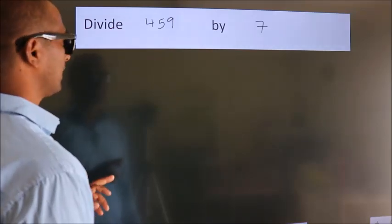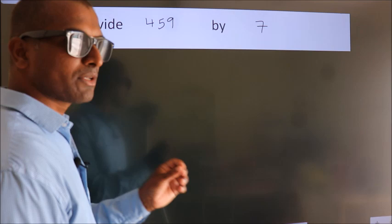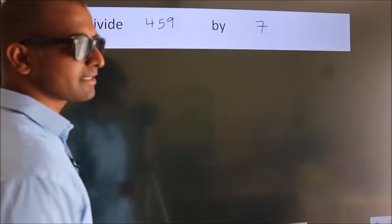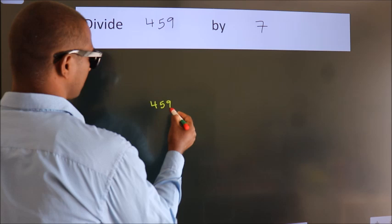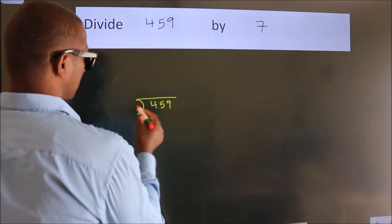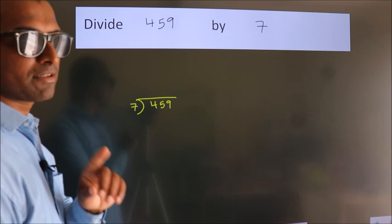Divide 459 by 7. To do this division, we should frame it in this way. 459 here, 7 here. This is your step 1.